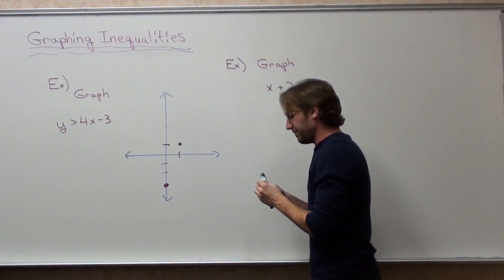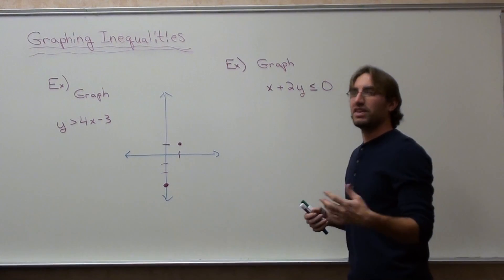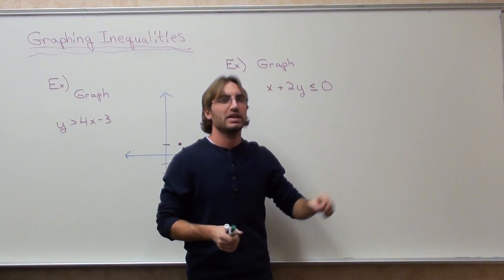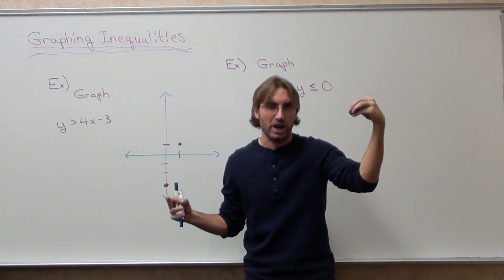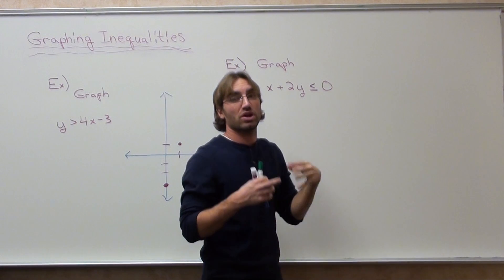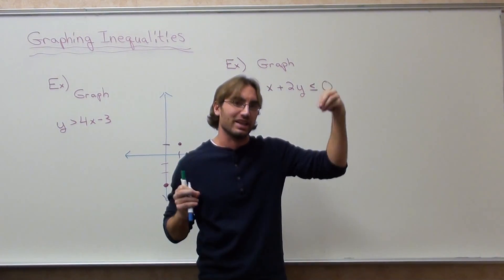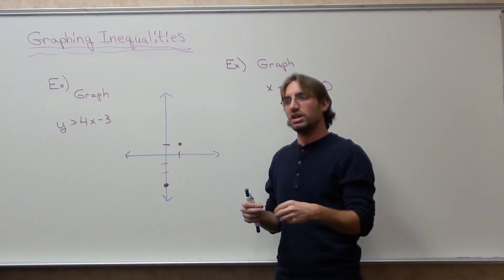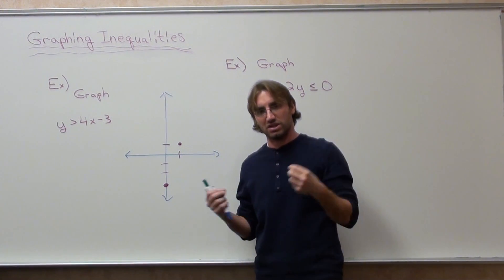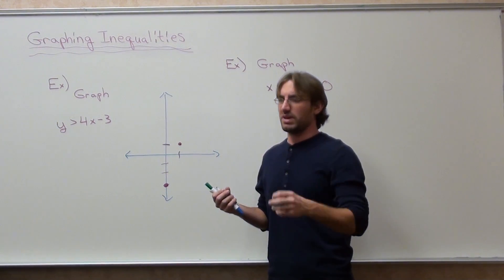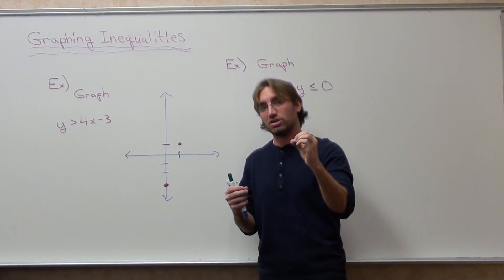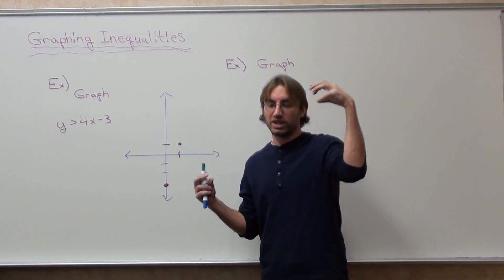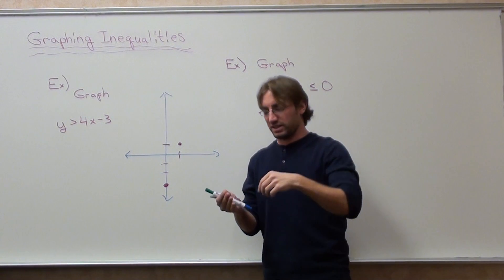A few things to keep in mind: if it does not have a line underneath, if it's greater than or less than, it's a broken line when you're graphing. If it's less than or equal to or greater than or equal to, it's a solid line. The broken line means it does not include the solution, and the solid line means it does include the solution. It's like open circle and closed circle.